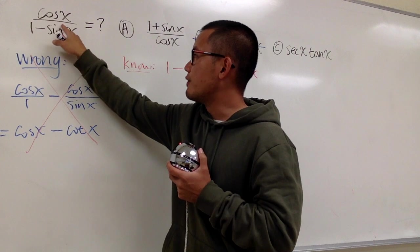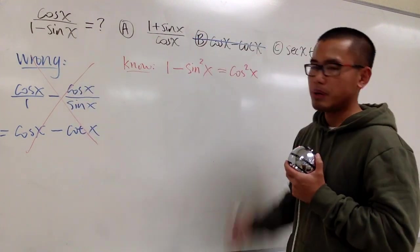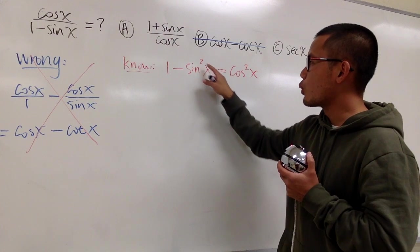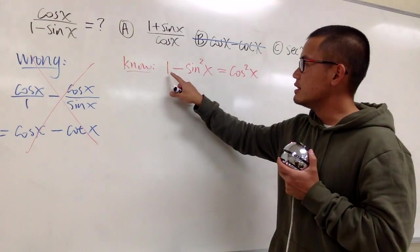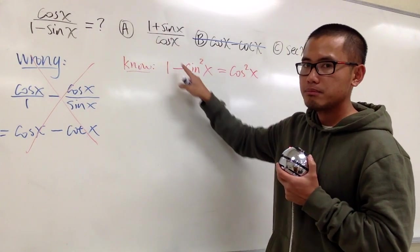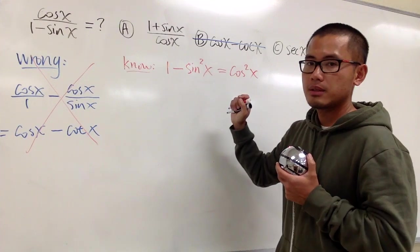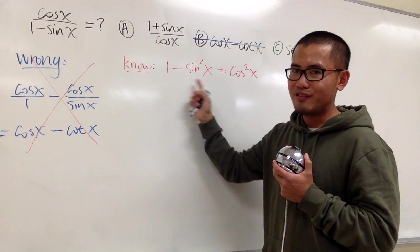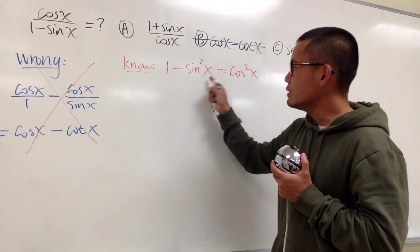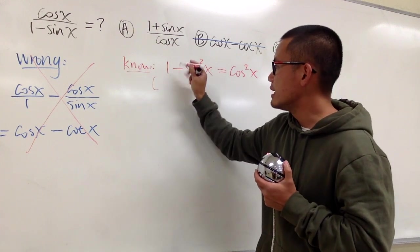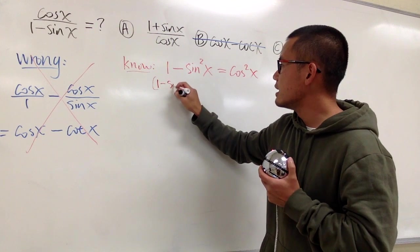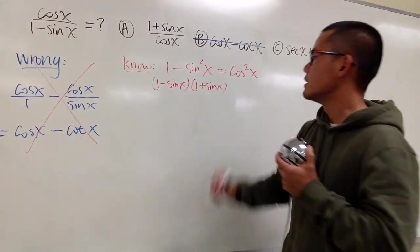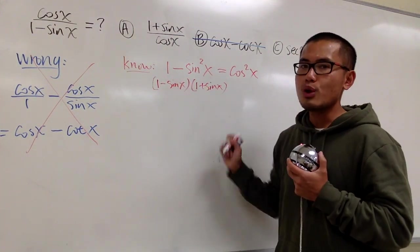As you can see, this is just sine to the first power, but this is sine to the second power. If you look at 1 minus sine square x, this is the same as 1 square minus sine square x. This is technically a difference of two squares. We can factor this out. If we do that, you will end up with 1 minus sine x times 1 plus sine x when you factor out the difference of two squares.